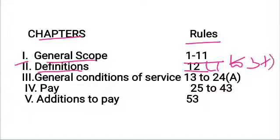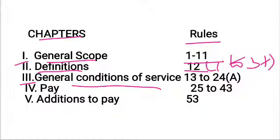Sub-rules include 12-1, 12-2, and 12-3. Chapter 3 covers general conditions of service, including health certificate requirements and other areas of service. Chapter 3 covers rules 13 to 24.